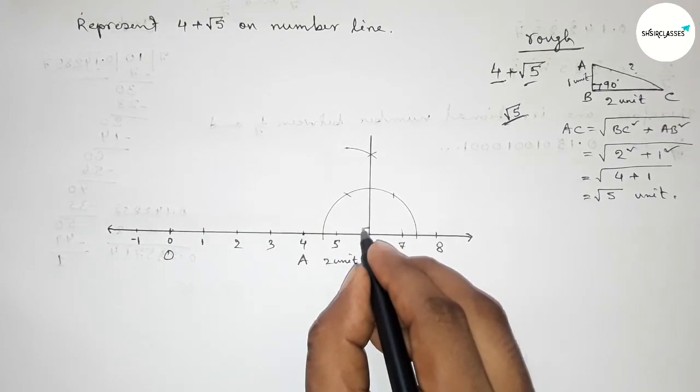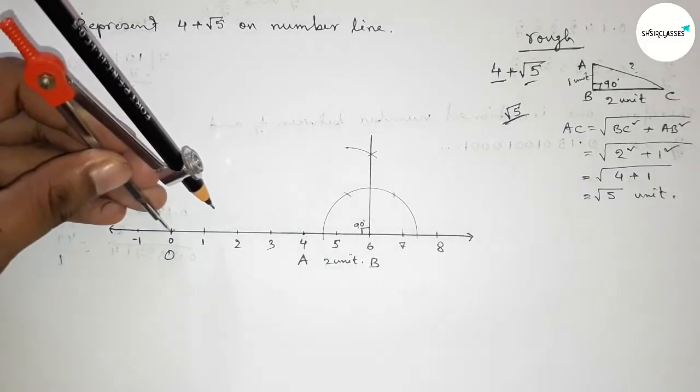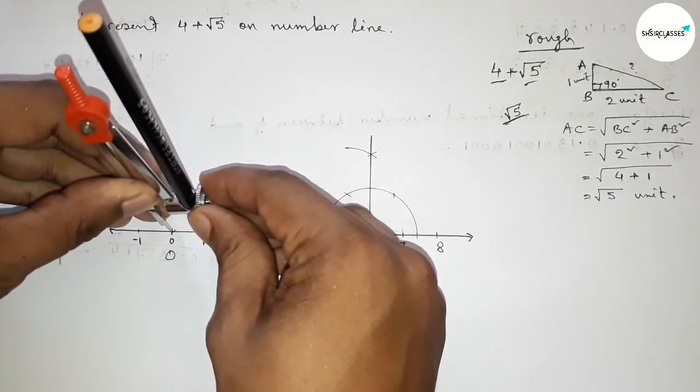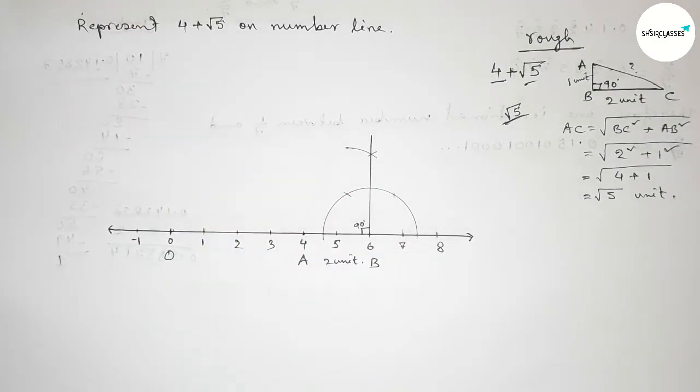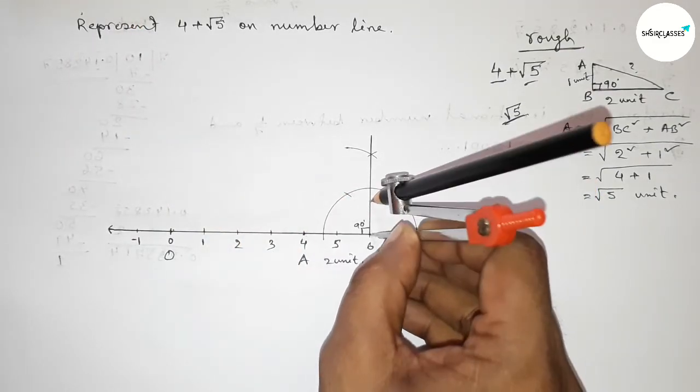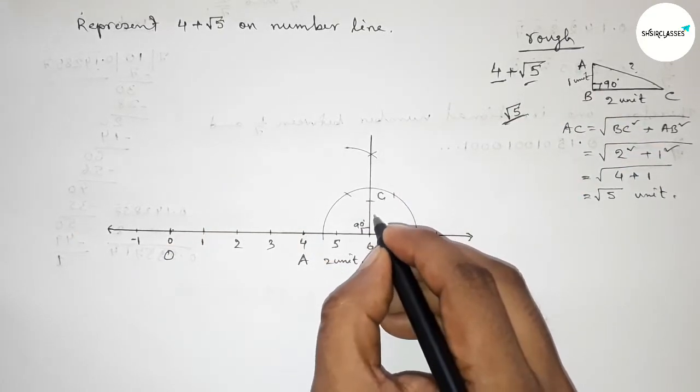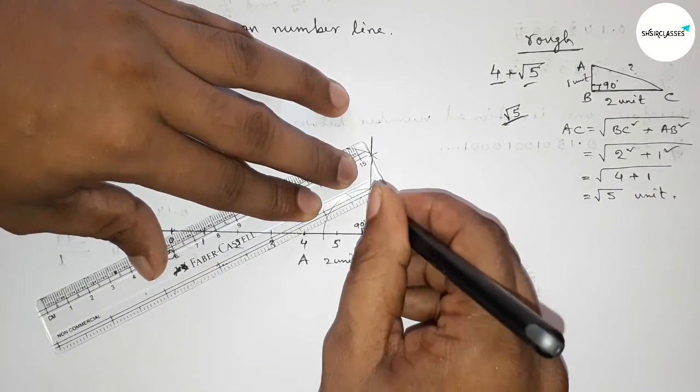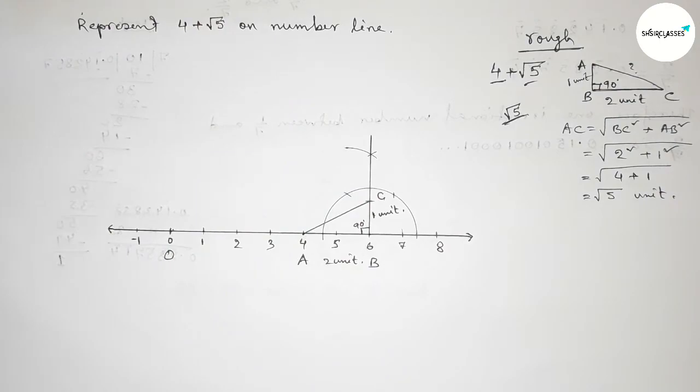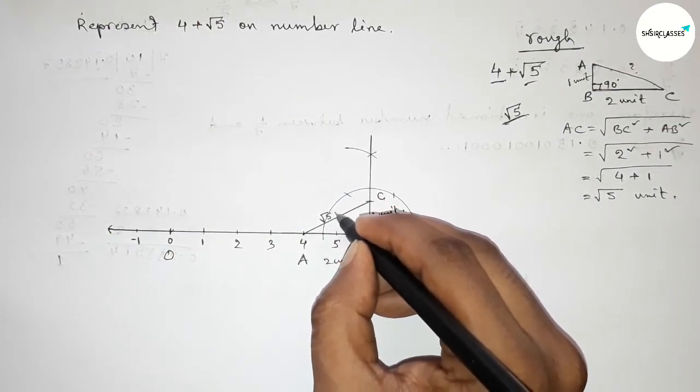Now taking one unit length by using compass by this way and putting the compass here and cut here. So taking point here C and this is 1 unit length. Now joining A and C first. So from this we can say that this is obviously √5 unit length.